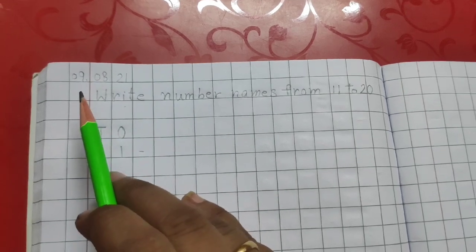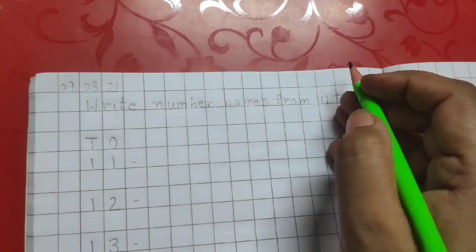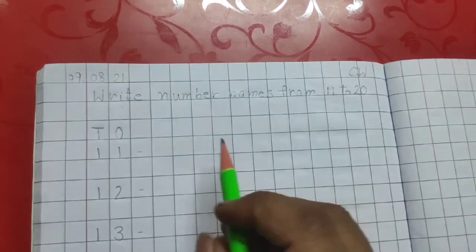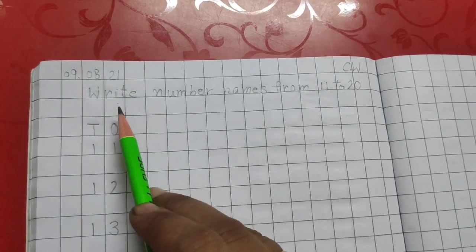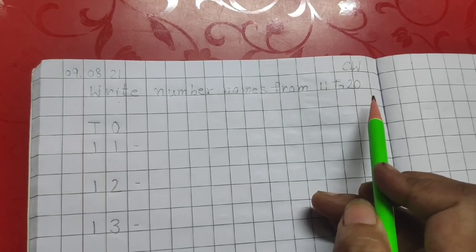On the top of the page, first you have to mention today's date, that is 9-8-21. And on the right side, you have to write CW for classwork. In the next line, after this red line, you have to write the heading: write number names from 11 to 20.